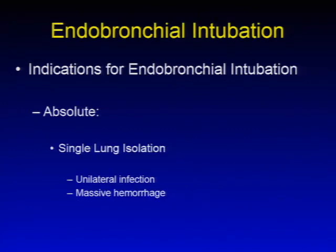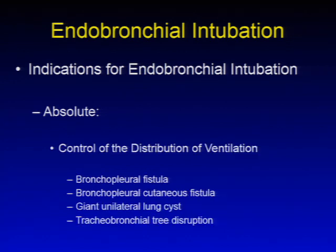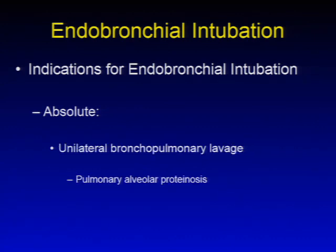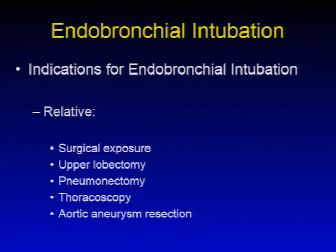Endobronchial intubation: absolute indications include single lung isolation for unilateral infection or massive hemorrhage, control of the distribution of ventilation in patients with bronchopleural fistula, bronchopleural cutaneous fistula, giant unilateral lung cysts, or tracheobronchial tree disruption, and unilateral bronchopulmonary lavage such as in patients with pulmonary alveolar proteinosis. Relative indications include surgical exposure for upper lobectomy, pneumonectomy, thoracoscopy, or aortic aneurysm resection.